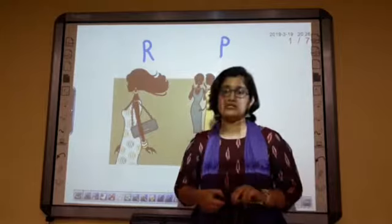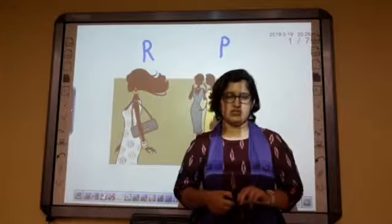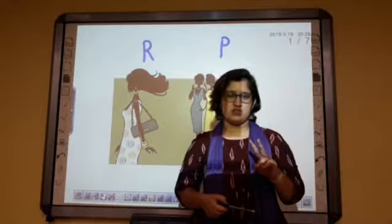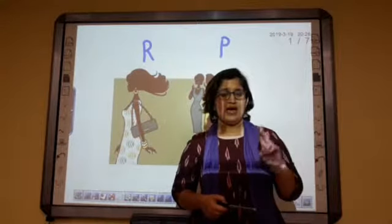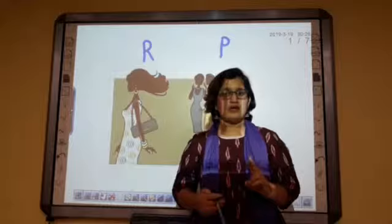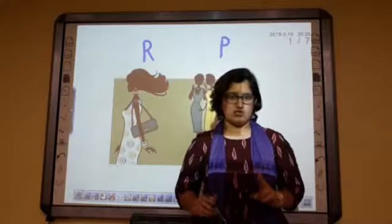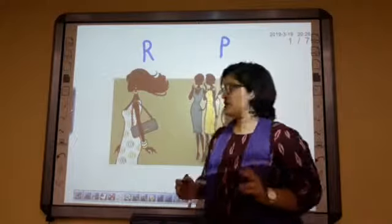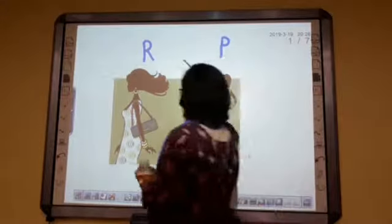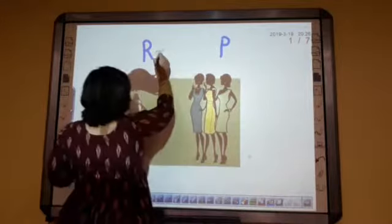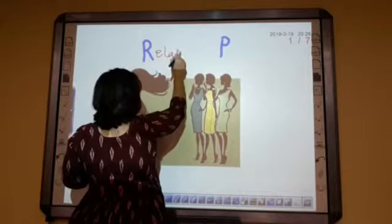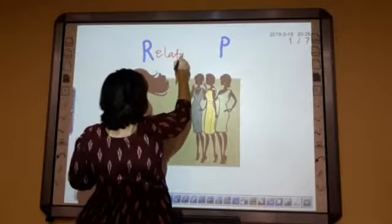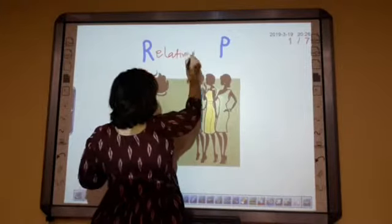Now there are two types of poverty. The first one is relative poverty and the second one is absolute poverty. Let us begin with the meaning of the term relative poverty.